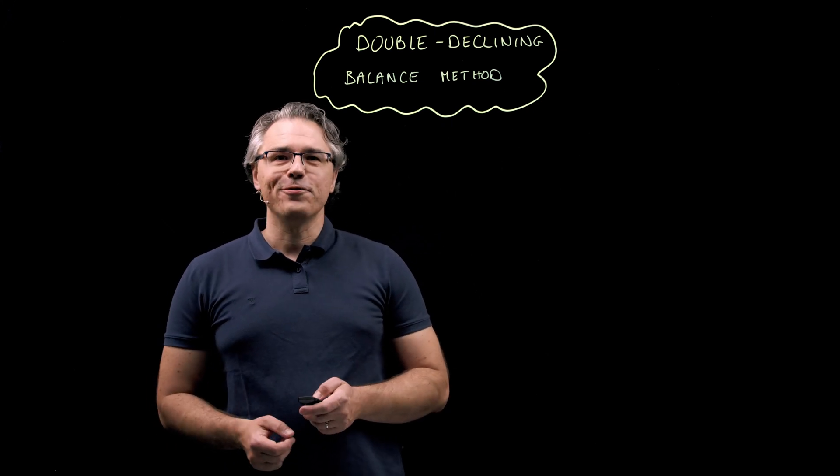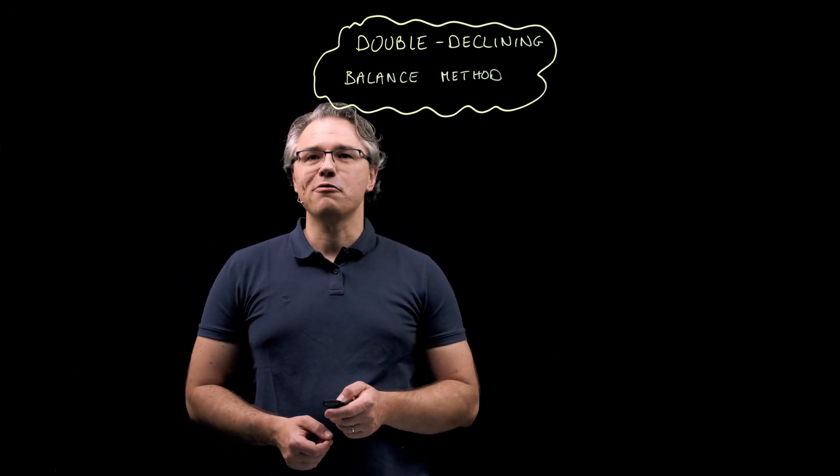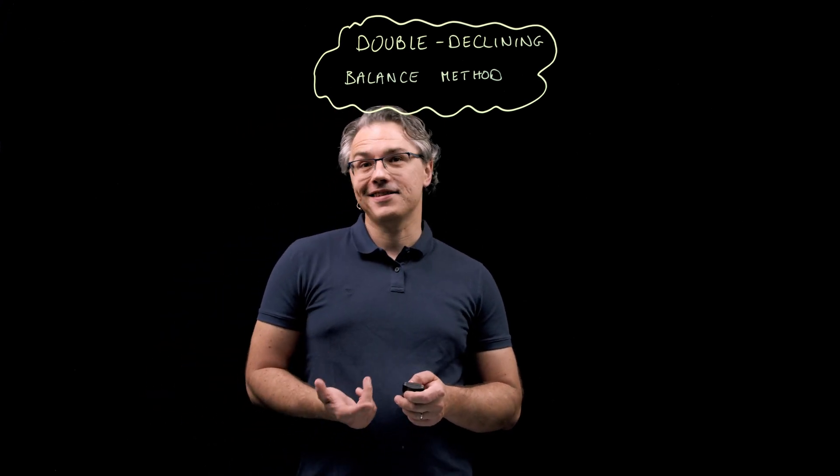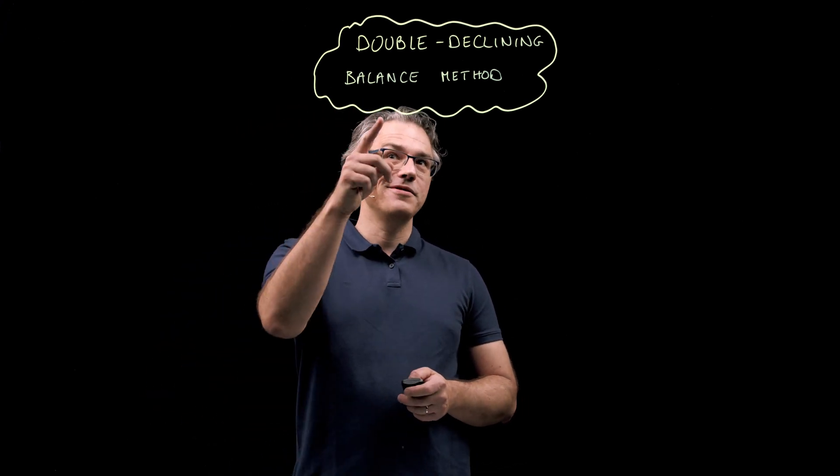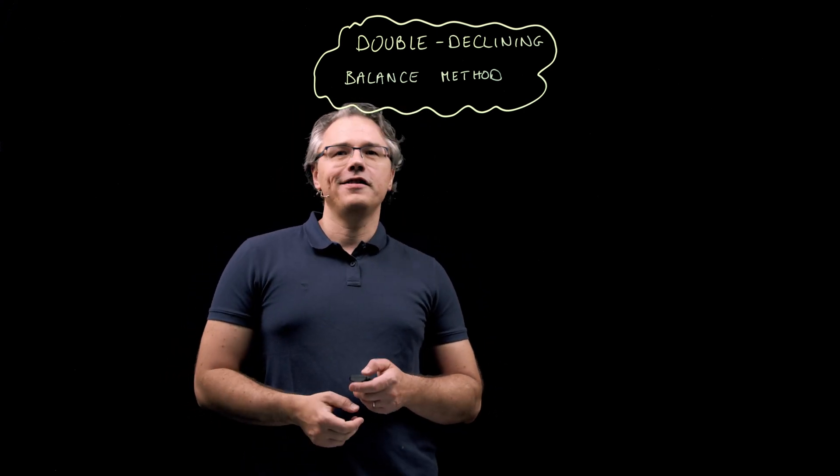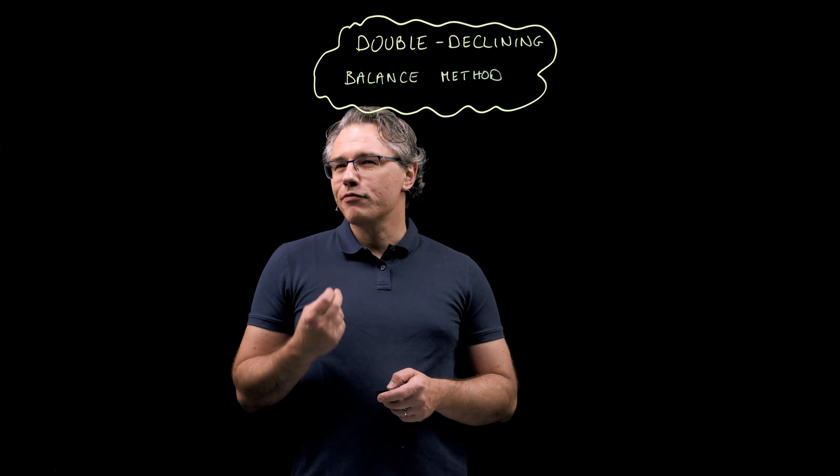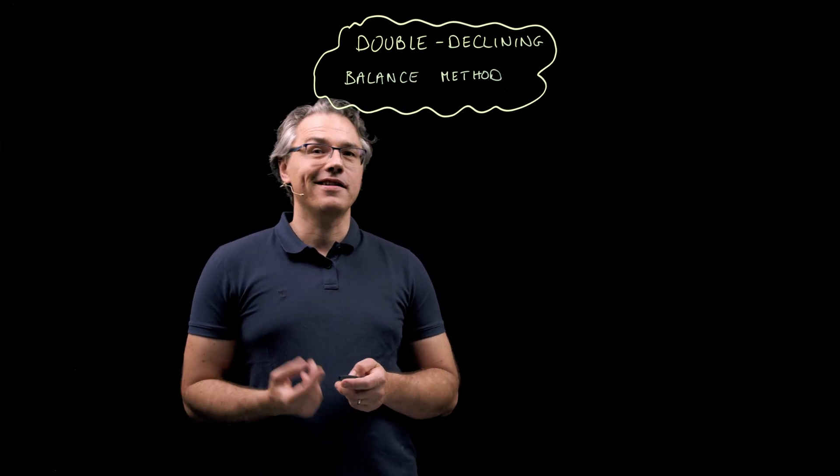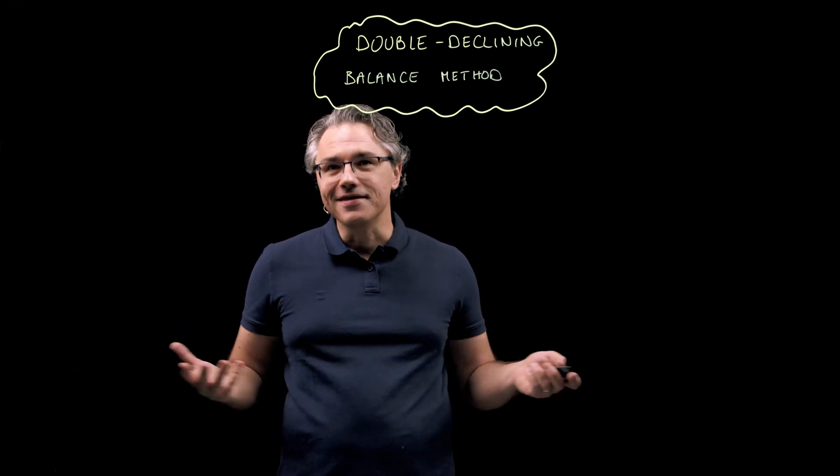In this video, we're going to go through a CFA Level 1 style question on depreciating long-term assets using the double declining balance method. The thing I notice is that most people are pretty capable of computing depreciation under the straight line method. That's nice and simple.